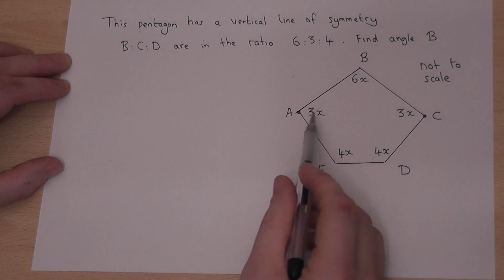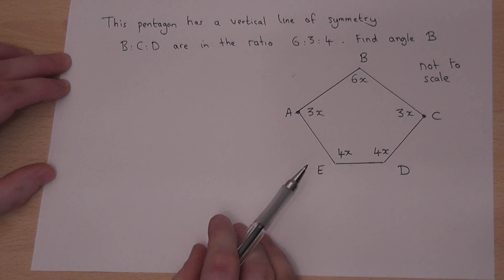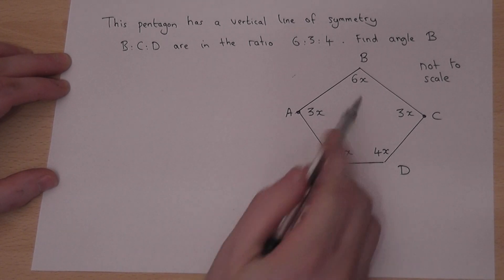Because the shape is symmetrical, those angles are the same as those two. Now the question is to find angle B.